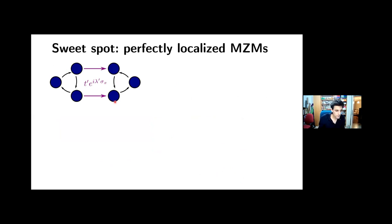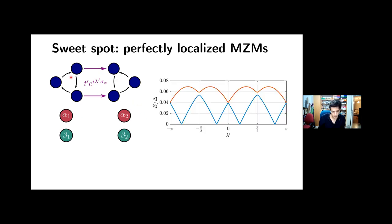So let me show you how this works. So we start by taking two rings, and then we're going to tune the parameters of each of the rings such that each one of them has a pair of zero energy Majorana states. So, you know, we have alpha one, beta one here, alpha two, and beta two here. And now we introduce the coupling between them, this purple line. And we're going to examine the spectrum of this two ring system as a function of this extra spin orbit phase, lambda prime connecting the two.